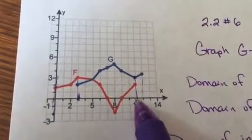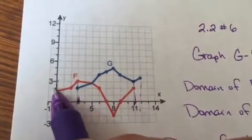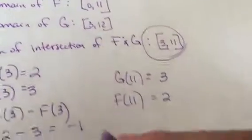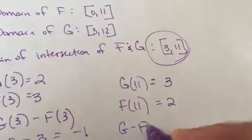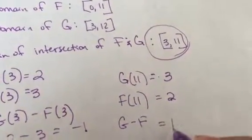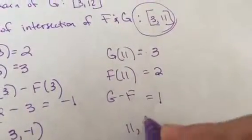f of 11. So again, we're going to go to 11. We're going to go to the red line and go straight across and it looks like it's 2. That's weird. So remember, we're taking g minus f. So 3 minus 2 is 1. So we're going to have the point (11, 1).